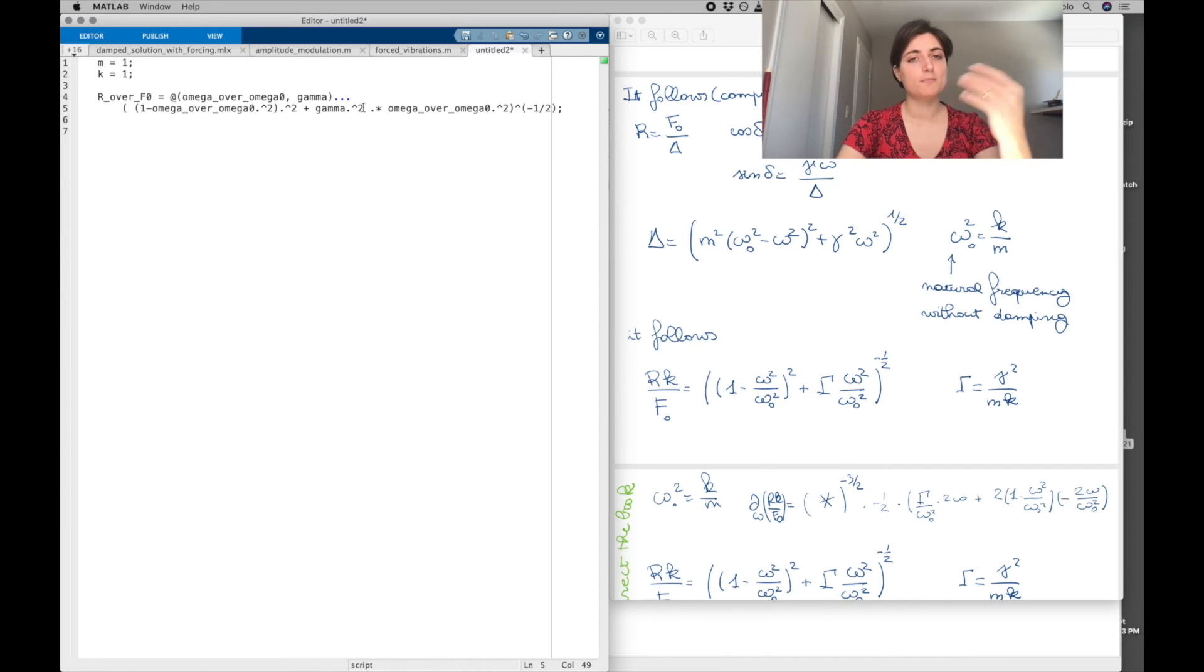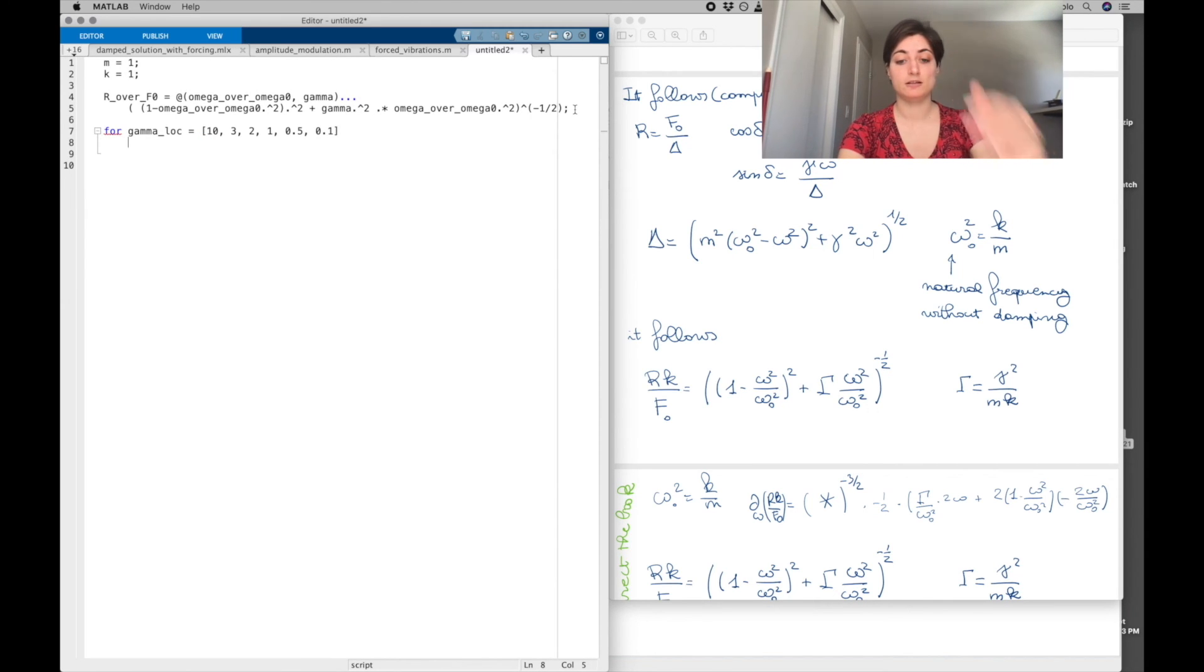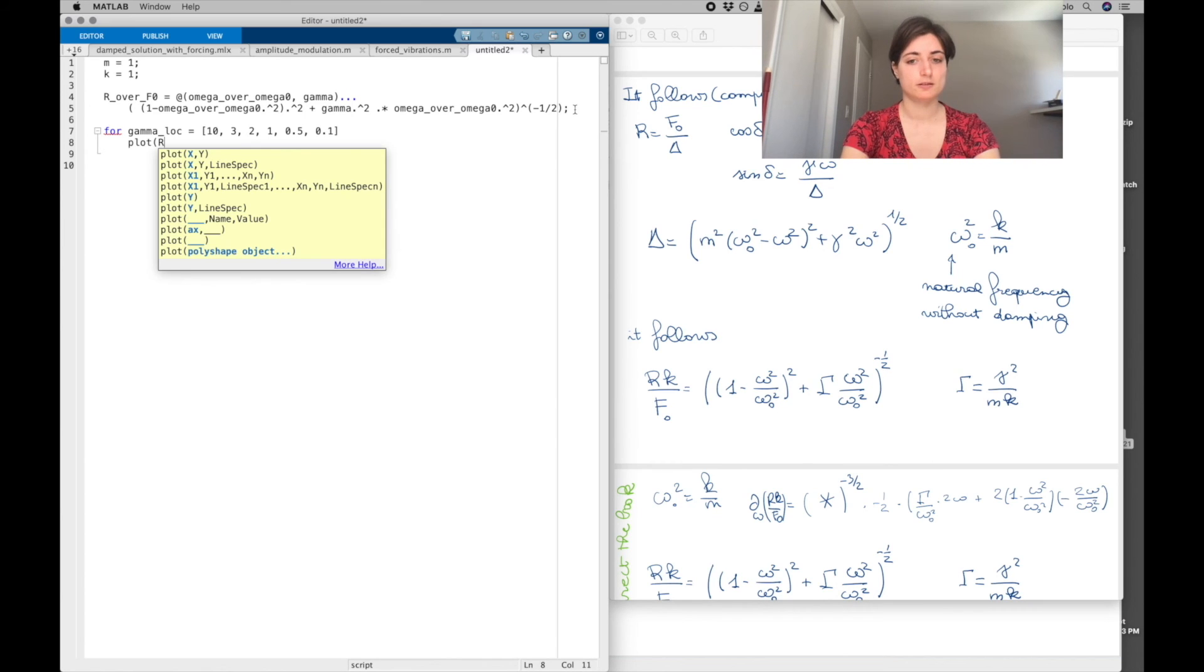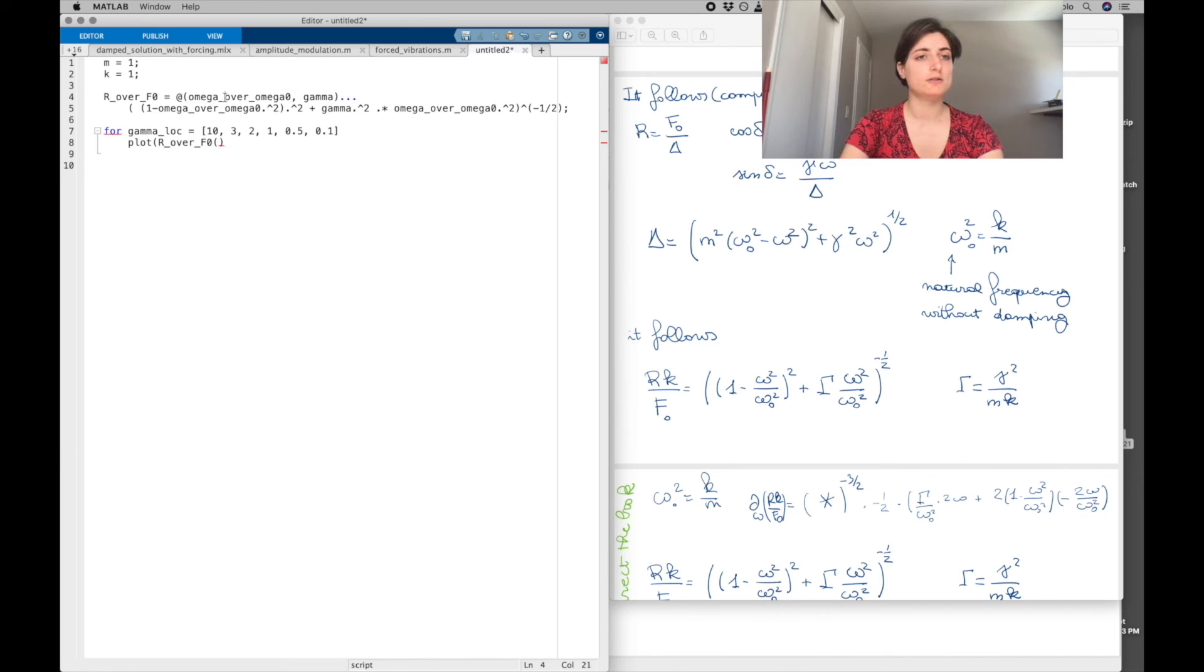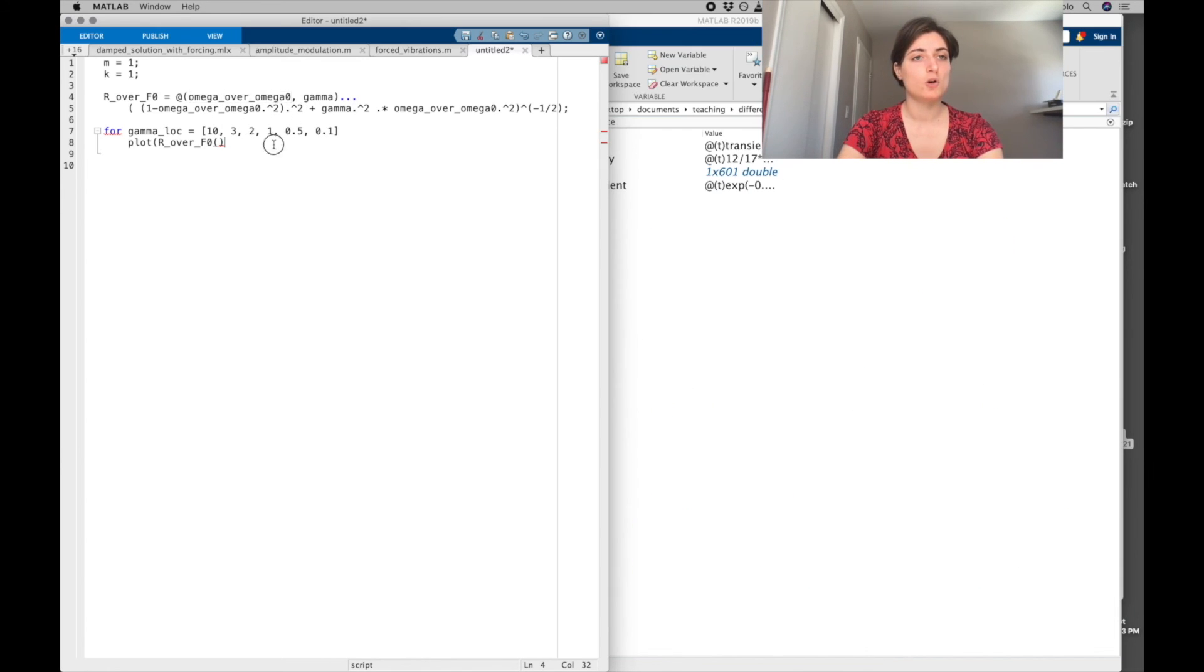Because I'd like gamma to be a vector, and omega over omega_naught to be a vector. And then I'm going to go on a for loop over values of gamma that I want to plot. So for gamma_local equal, and here I'm going to plot values of gamma that I am interested in. For example, we start with gamma very big, then we go smaller: 3, 2, 1, 0.5, and 0.1. I'm going to plot R/f0 as a function of omega over omega_naught vector that we haven't defined yet, and gamma_lock.